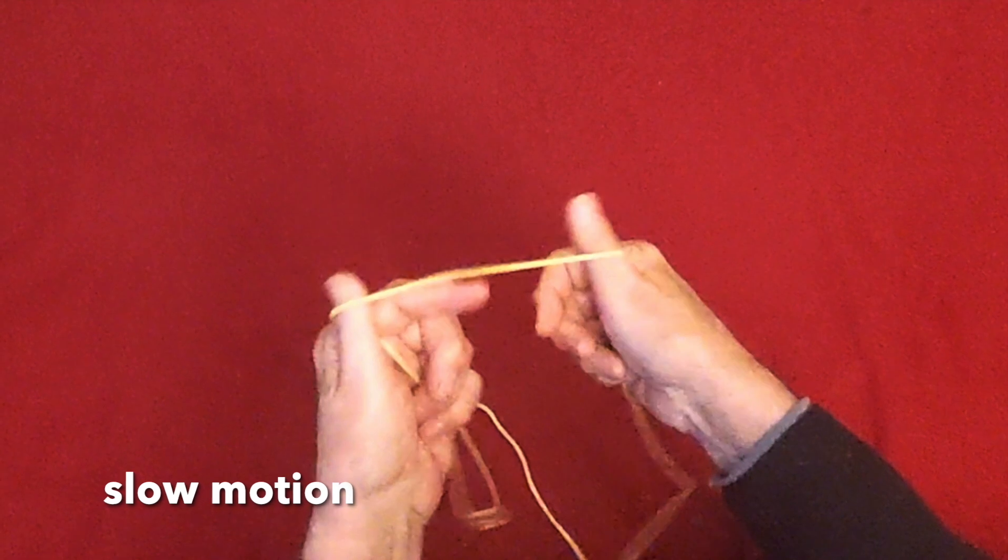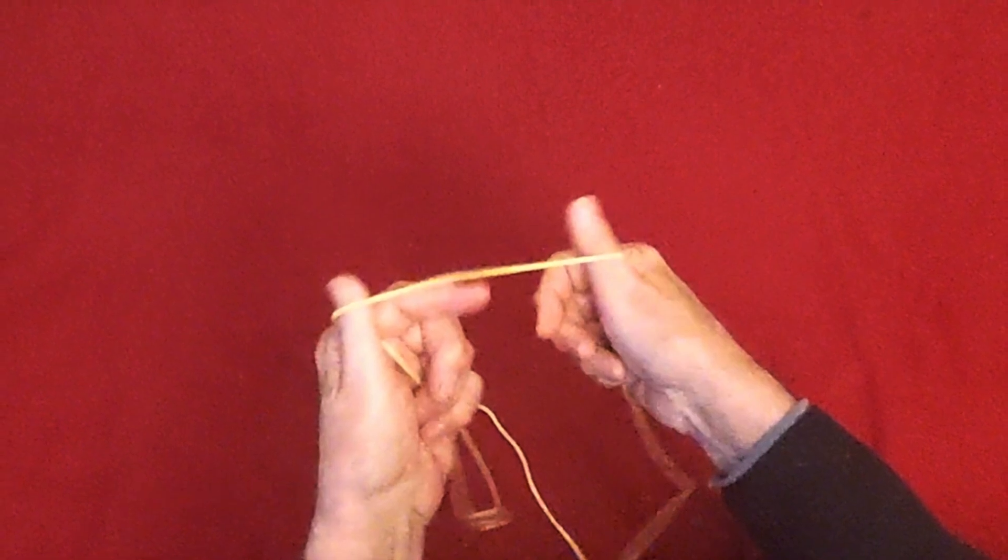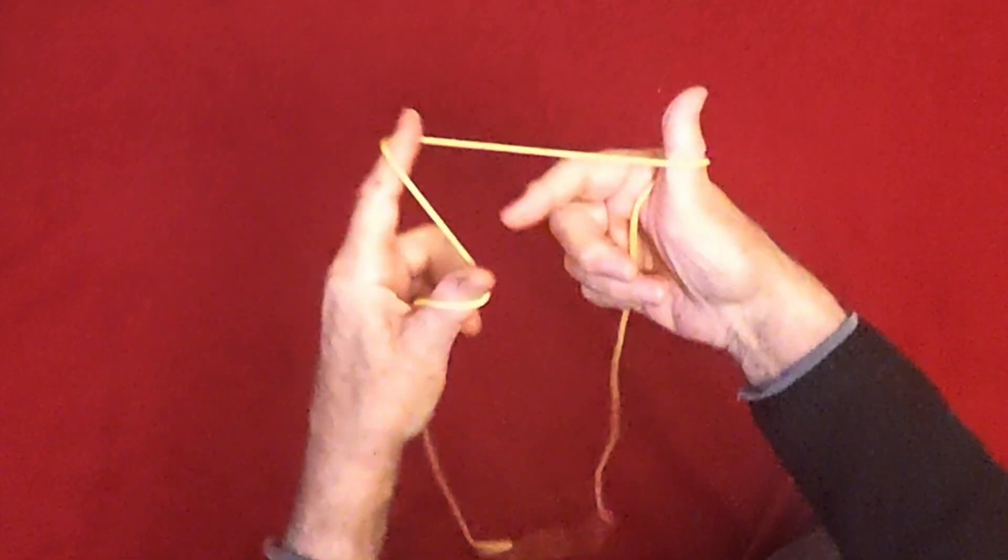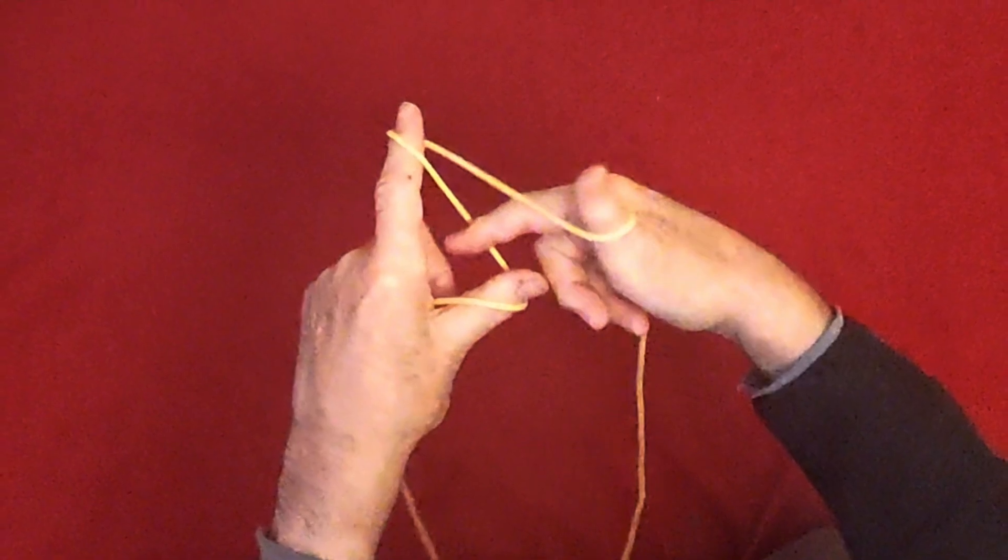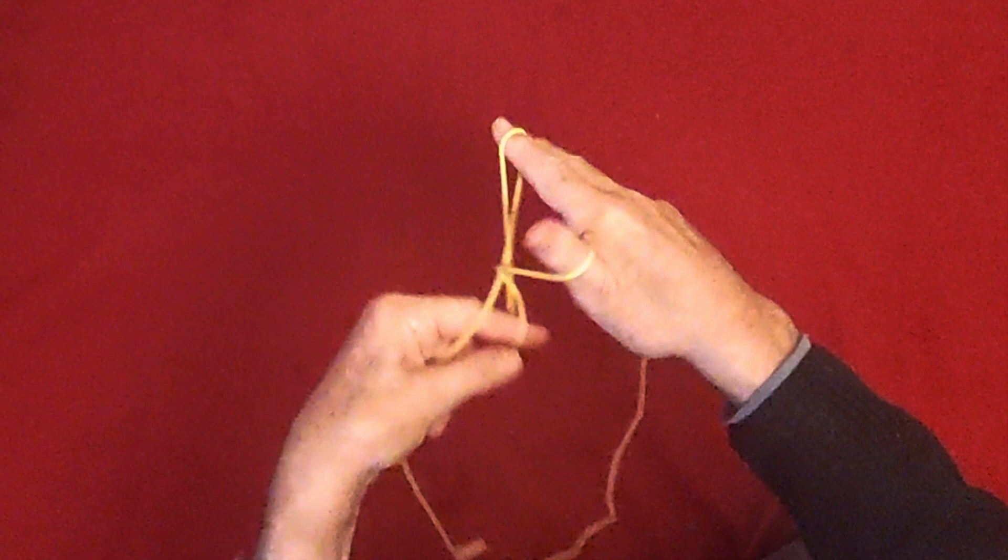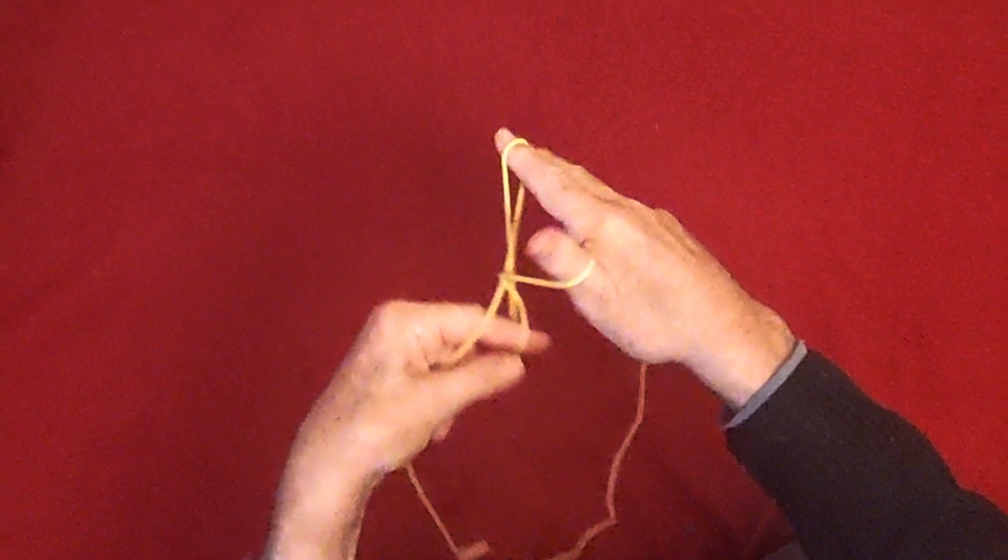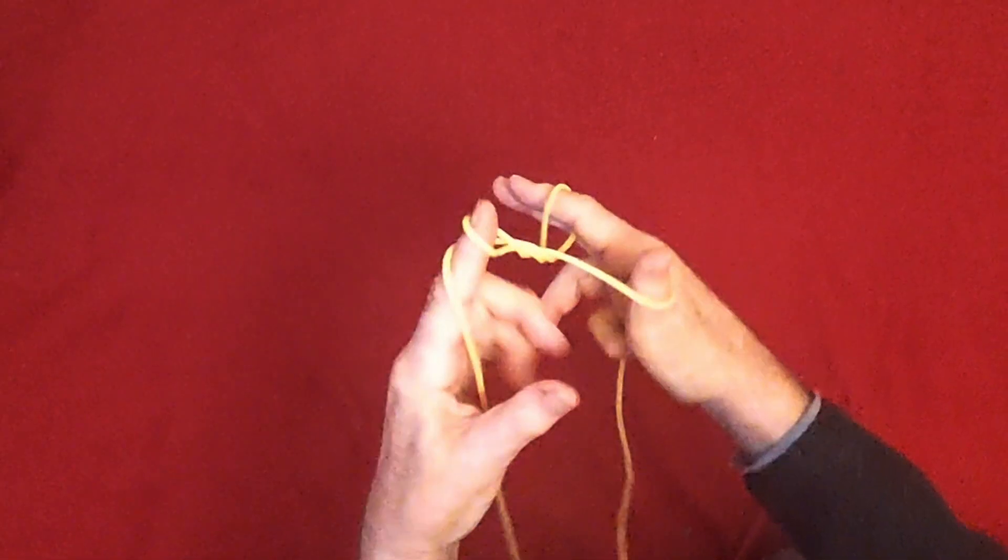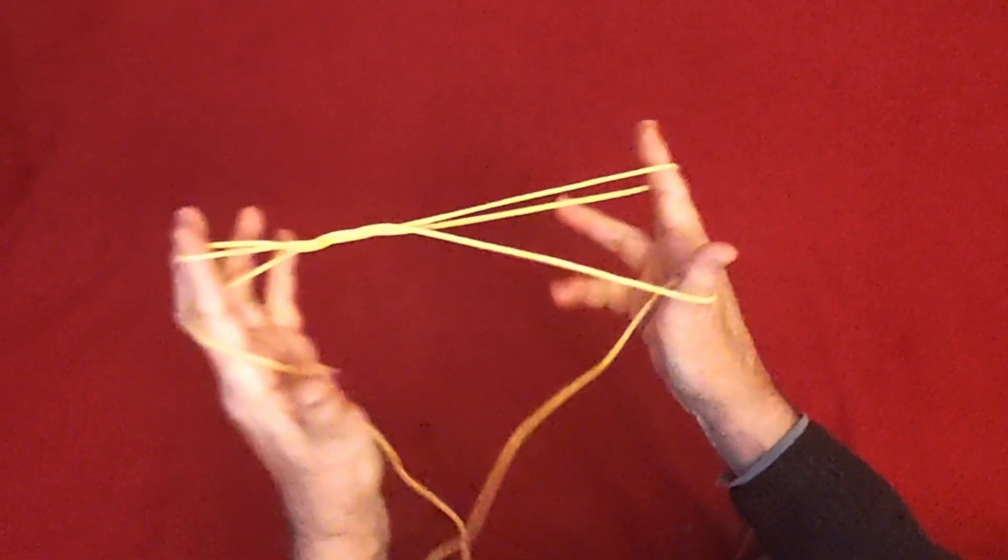Begin with a small length of the loop between your near thumbs and the left index goes under that string to the left. The right index comes over the string between the left thumb and index and then the left index draws back and the right index twists down into the original loop and up again and you draw tight.